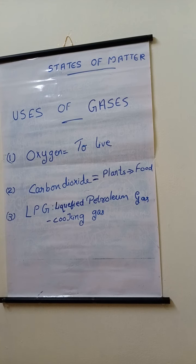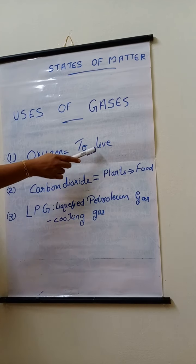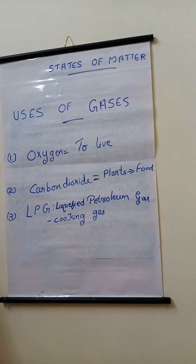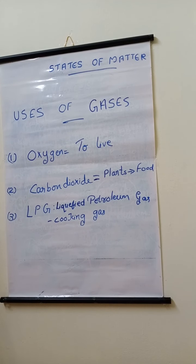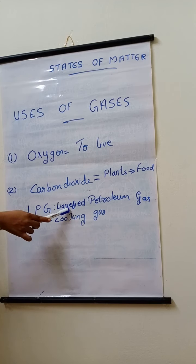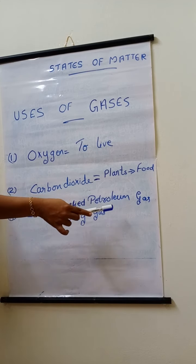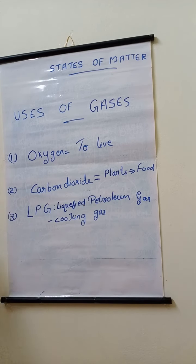Next one is uses of gases. Oxygen, carbon dioxide etc. are examples for gases. All animals and plants need oxygen to live. Plants need carbon dioxide to make food. We are using gas for cooking food. The name of the cooking gas is liquefied petroleum gas. The short form of liquefied petroleum gas is LPG.